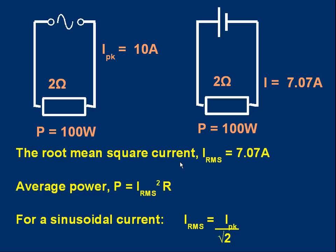We give it a special name: we call this value the root mean square current, with symbol I_rms. Its value in this example is 7.07 amps. Notice that the average power is easy to calculate if you know the RMS current: the average power is simply I_rms² × R. So 7.07² × 2 gives us 100 watts.